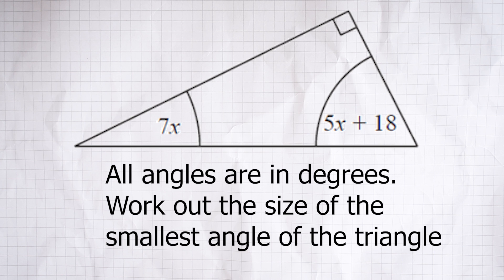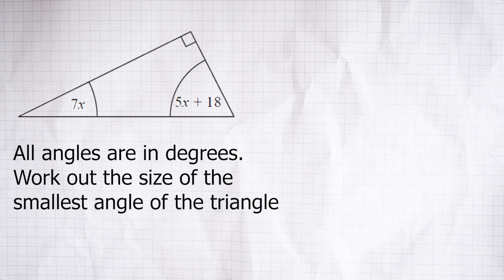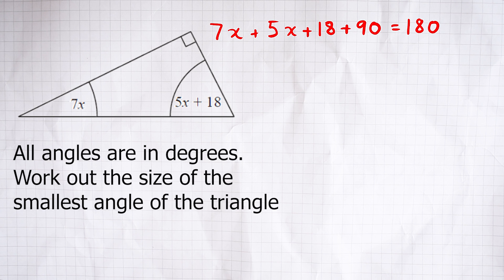Let's look at a second example. Before I go through this, I'd urge you to pause the video and have a go yourself. Here we're being asked to find the size of the smallest angle — we'll find all the angles and establish which is smallest at the end. It's a triangle, so they add to 180 degrees, and we can describe those angles algebraically. We also have that 90-degree angle. So we can form an equation: 7x + 5x + 18 + 90 = 180. Now all we've got to do is solve it.